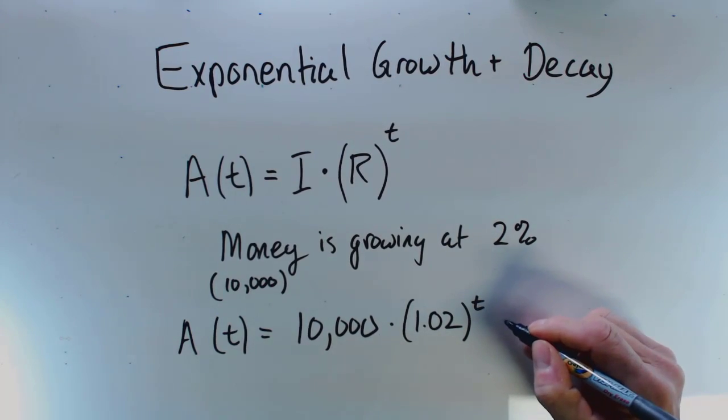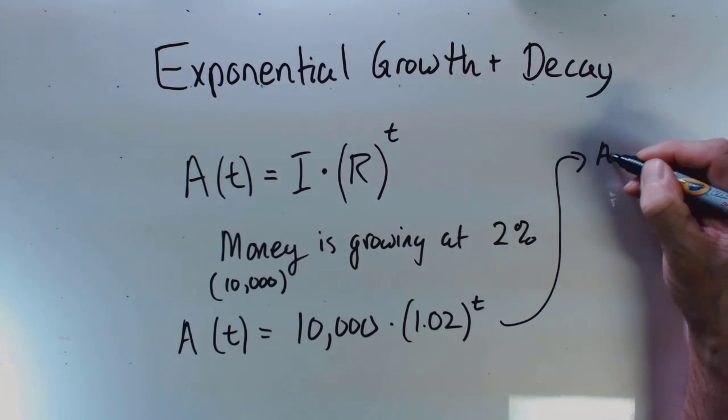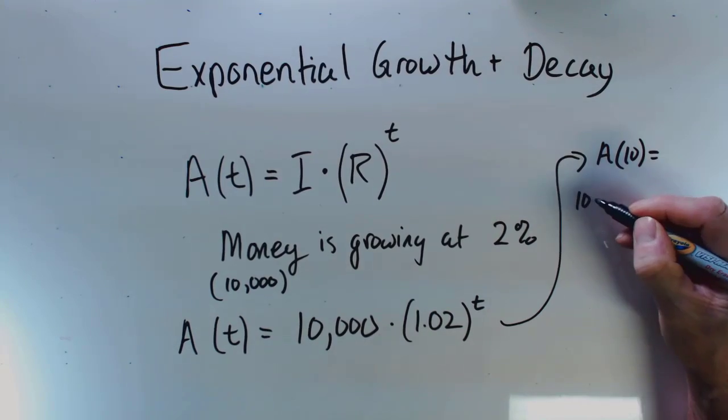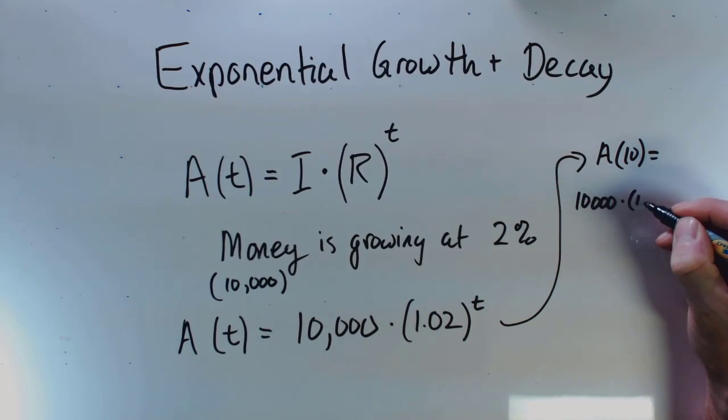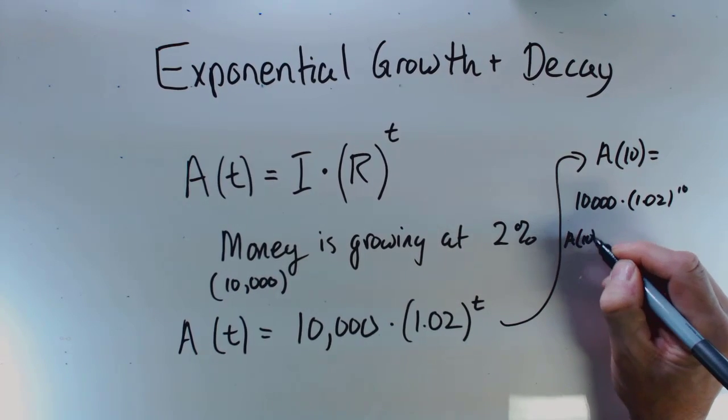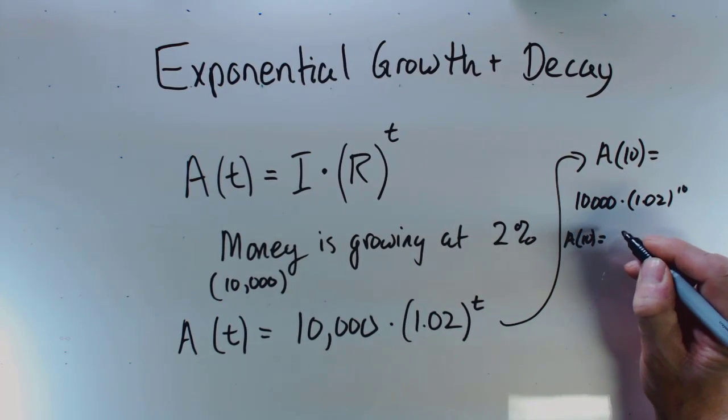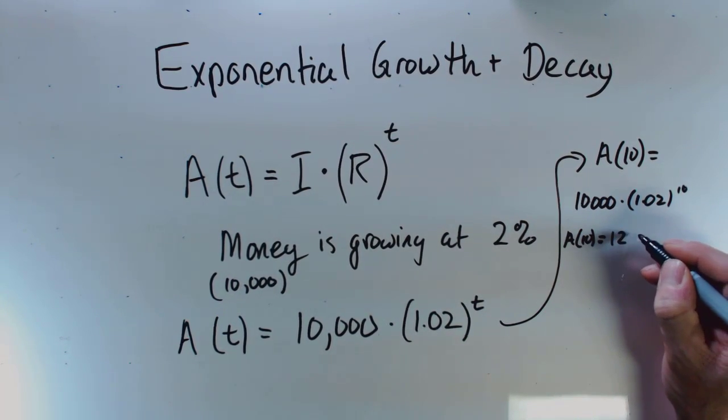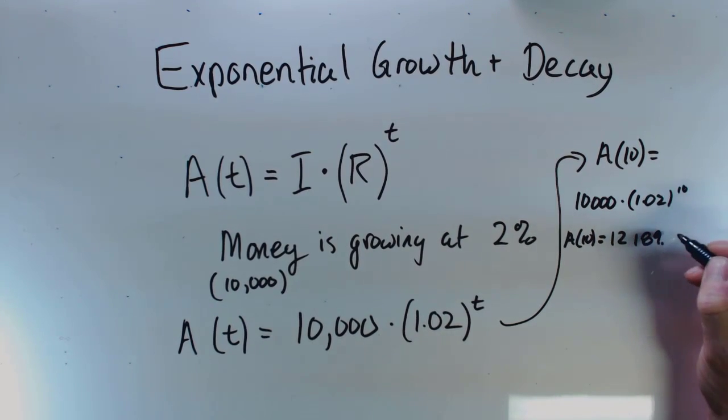The amount after 10 years would be 10,000 times 1.02 to exponent 10. So the amount at 10 years would be equal to $12,189.94.